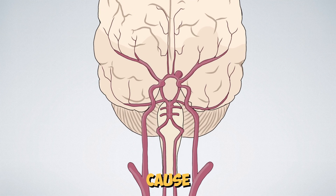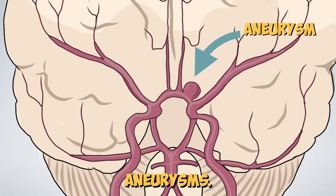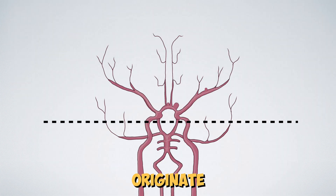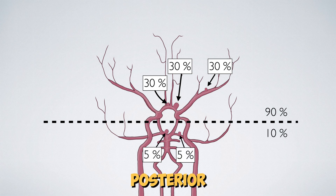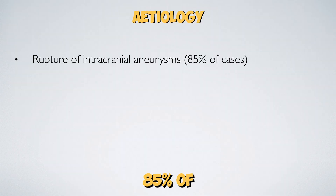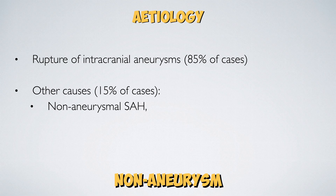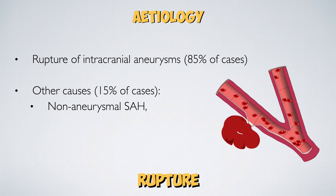The primary cause of subarachnoid haemorrhage involves the rupture of intracranial aneurysms. Around 90% of aneurysms originate from the anterior circulation, whilst 10% emerge from the posterior cerebral circulation. Aneurysm rupture accounts for approximately 85% of cases, and the remaining 15% stem from causes like non-aneurysmal subarachnoid haemorrhage, where cerebral artery walls become weak and rupture.